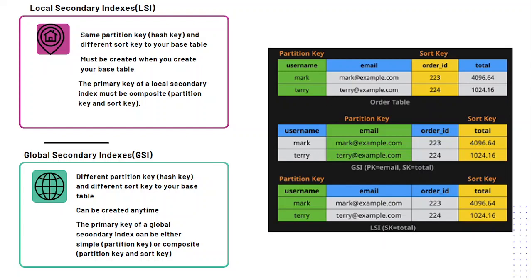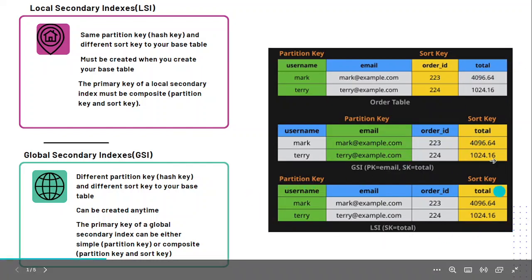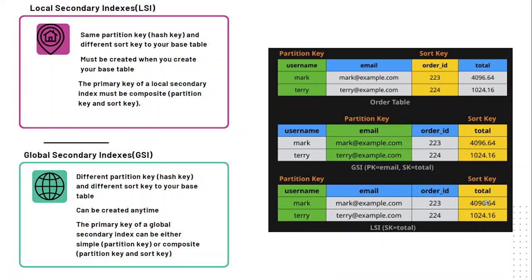The primary key for an LSI must always be composite because we are using the same partition key. As we can see in this image, for our order table, when we created the local secondary index, we use the same partition key but change the sort key. Previously the sort key was order ID, and now we make it 'total'.